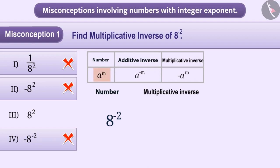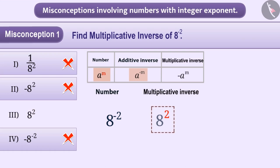Remember that the multiplicative inverse of a number a to the power m is a to the power minus m. For this reason, the multiplicative inverse of 8 to the power minus 2 is 8 to the power 2. Hence option 3 is the correct answer.